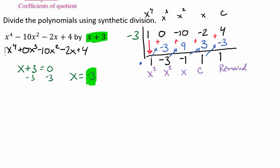Because the whole point of dividing it was to take it down a degree. Okay, so what we're really looking at here is we're looking at 1x³ - 3x² - x + 1 + 1/(x + 3). Now remember we got that from up here. And so this right here is our solution.